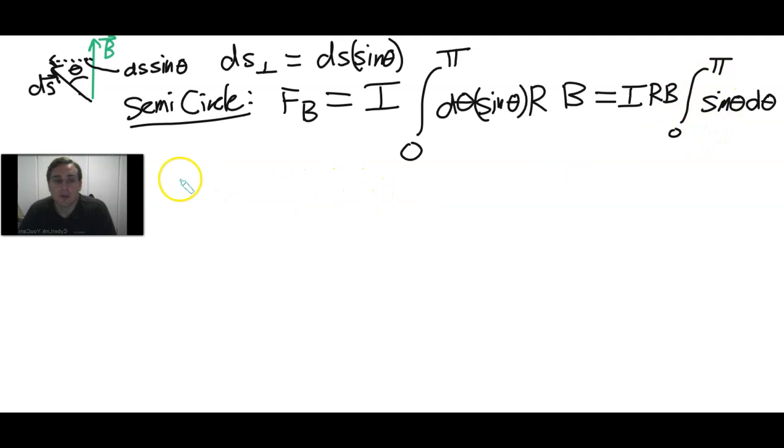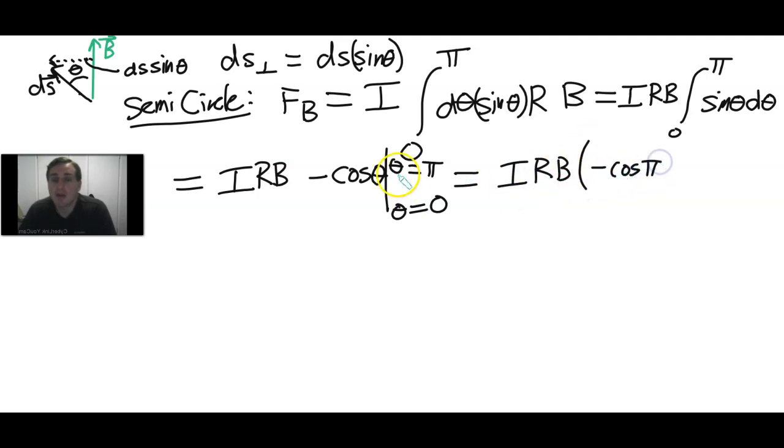Now we can integrate this. This is a calculus one integral. The integral of sine theta is the negative of cosine theta. This is IRB times minus cosine theta, evaluated from theta equaling pi for the upper bound and zero for the lower bound. This is IRB times minus cosine pi plus cosine zero. The cosine of pi is negative one and the cosine of zero is one. So negative times negative one is positive one, plus one, that's two. We get 2IRB.